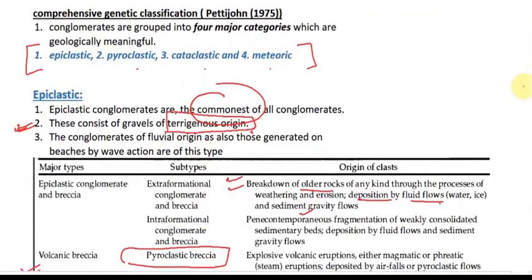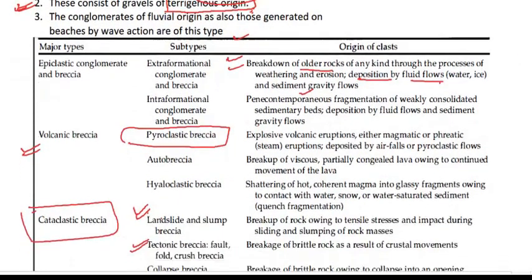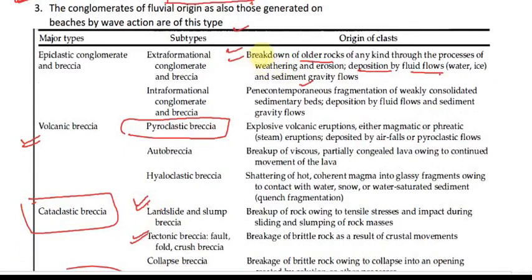Now let's talk about the genetic classification of conglomerate — that is, classification based on origin. We have divided conglomerate into four basic types: epiclastic, pyroclastic, cataclastic, and meteoric. Epiclastic conglomerates are the most common of all conglomerates. They consist of gravels of terrigenous origin — meaning derived from the breakdown and weathering of pre-existing rocks, followed by transport, deposition, and lithification. Conglomerates of fluvial origin, as well as those generated on beaches by wave action, also fall under this type.